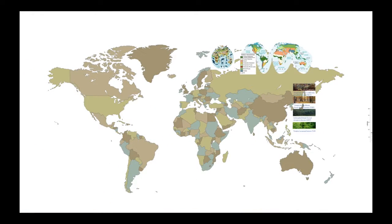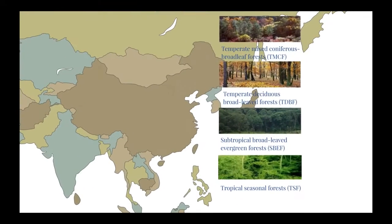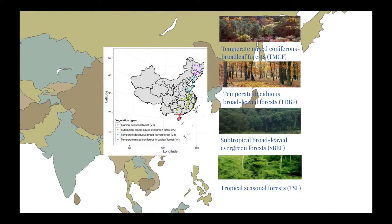In the manuscript accepted by mSystems recently, we collected more than 100 soil samples from the natural forests reserved along 3,000 km across the four continuous vegetation types in eastern China.